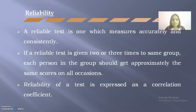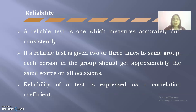Now we will discuss reliability. A reliable tool is one which measures accurately and consistently. If a reliable tool is given two or three times to the same group of people, it should yield approximately the same scores on all occasions. Reliability of a tool is expressed as a correlation coefficient. There are mainly four methods for assessing reliability: test-retest method, equivalent or parallel form method, split-half method, and the rational equivalence method.